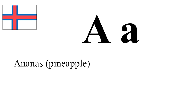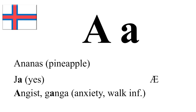So the first sound is A, as in Ananas. However, you can also see A in other words like Ea, where the sound is more like an Ea in the letter Seidna — Ea. And then you also have the sound of Engist, Genga, which I will refer to as the short Faroese E. Engist, Genga. And you're going to see this in other sounds as well.